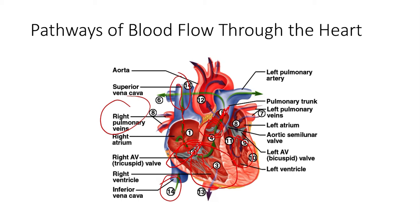Once depolarization occurs, the left atria contracts, kicks that last 20 percent of volume into the left ventricle, which then pumps out into the aorta, perfusing the rest of the body including the heart itself. Both sides are pumping simultaneously — the heart is a double pump. The right side and left side both contract almost simultaneously, as described through the conduction system and bundle branches. These events occur simultaneously to create coordinated pumping.